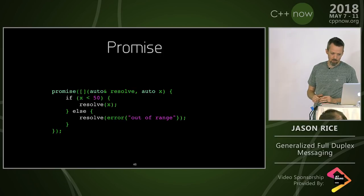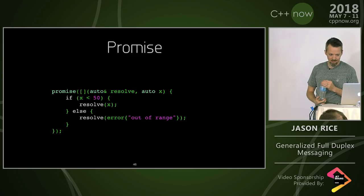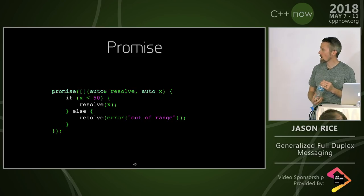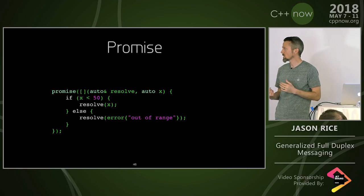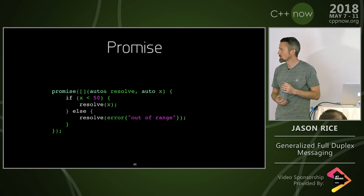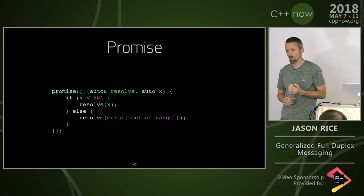To create a promise that actually does something, you can give it a lambda that takes this callback 'resolve' as a reference so you don't have to capture it, and its input value. This is the interface for promise. It can do the same thing as before — it checks some runtime condition and can resolve X or resolve some other error type.